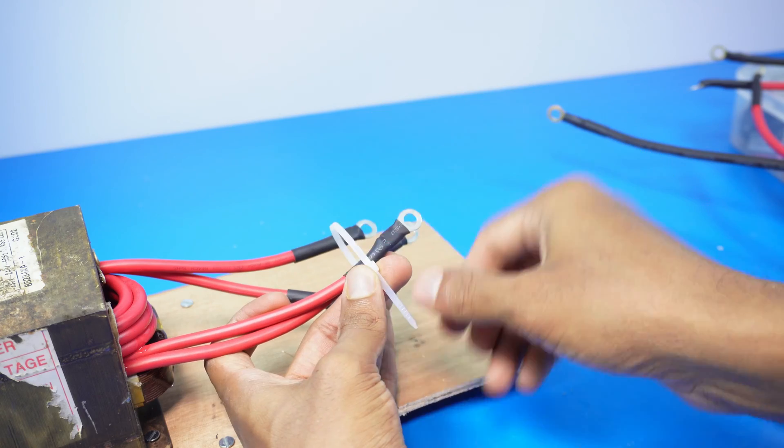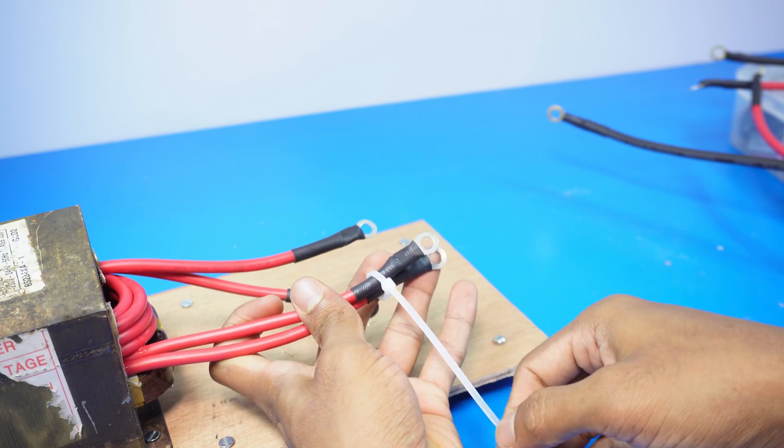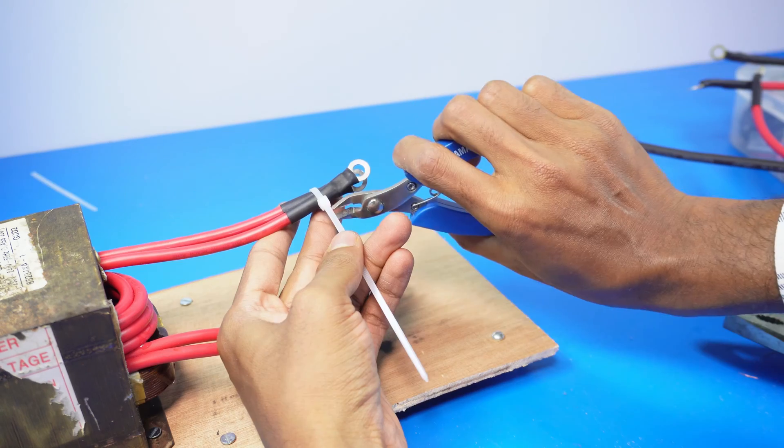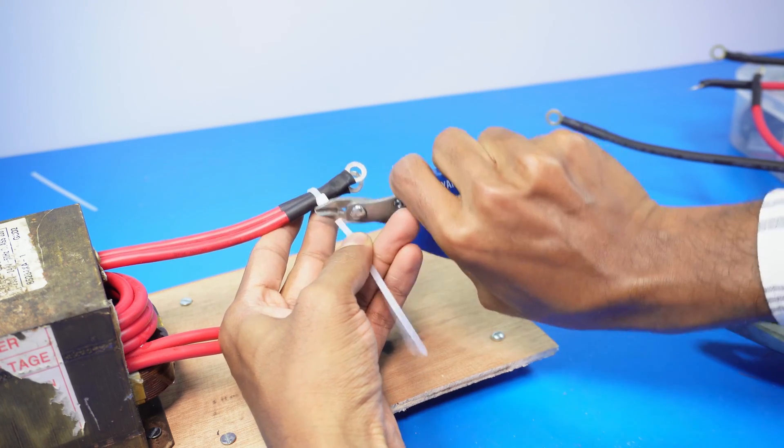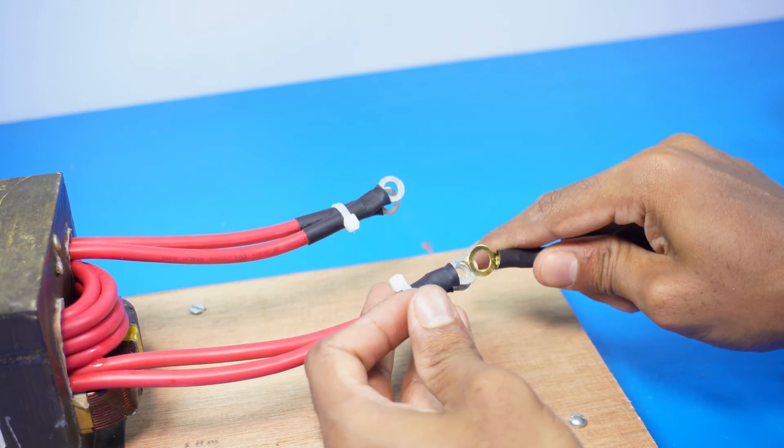I tied wires of the same terminus together using zip ties to keep them strong and secure. Next, I attached the wires using screws and fixed them to the plywood so they wouldn't dangle around.